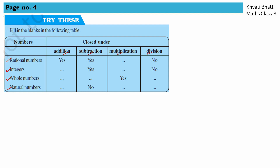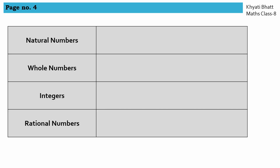First, let us understand what these numbers are, then we will see what the property of closure is. Let us revise all the numbers. First are natural numbers — natural numbers are 1, 2, 3 and so on. Whole numbers include 0, so 0, 1, 2, 3 and so on.